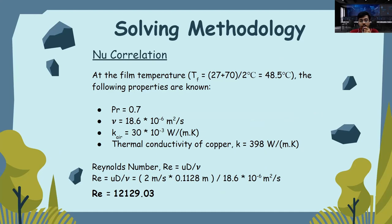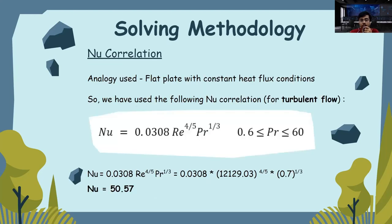Reynolds number is given by the following formula: u × d divided by kinematic viscosity. Substituting the values, we get Reynolds number of the order 12,000, which falls in the turbulent region. Analogy used for Nusselt correlation is a flat plate with constant heat flux conditions. So, for turbulent flow, we have the following Nusselt number correlation, which is Nu = 0.0308 × Re^(4/5) × Pr^(1/3). Here, Prandtl number is equals to 0.7. So, substituting the values, we get Nusselt number equals to 50.57.